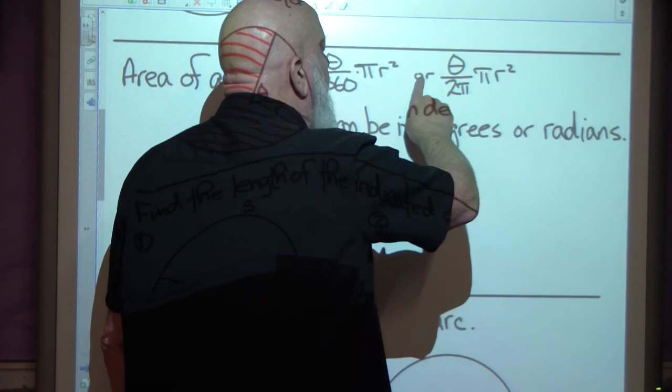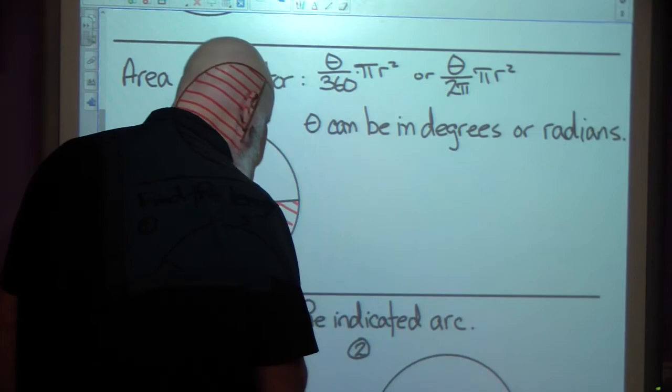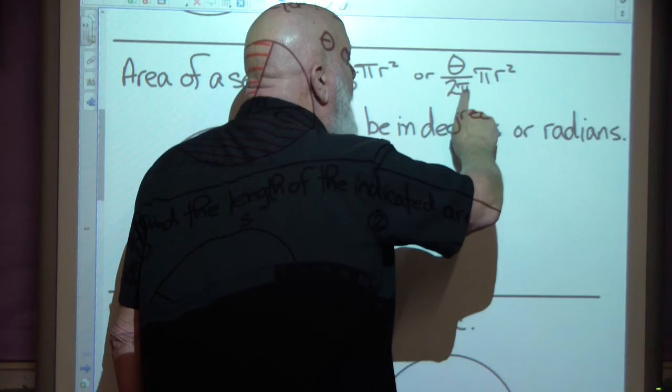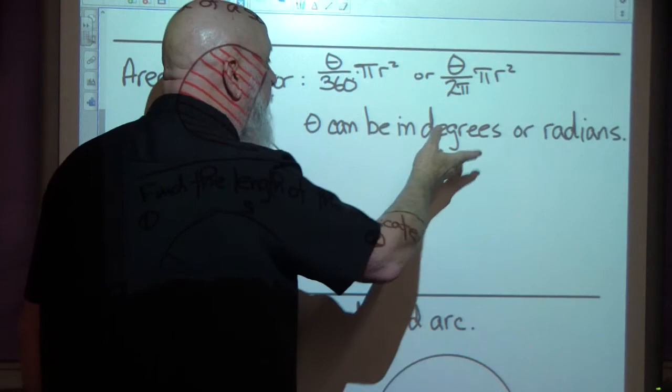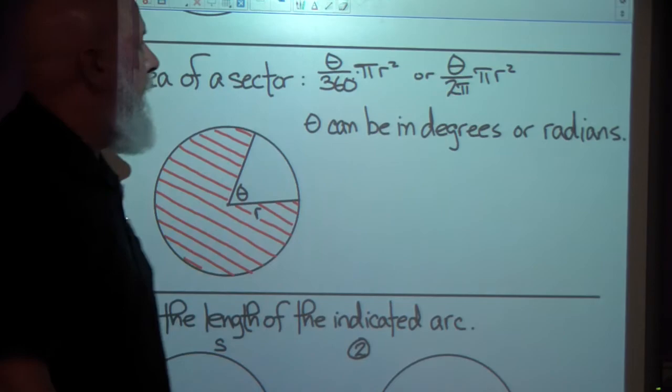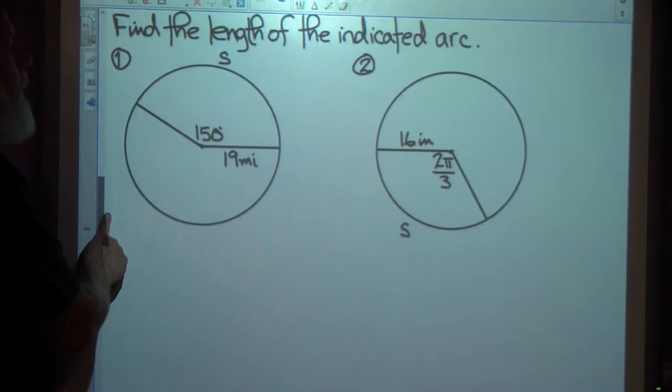Or if it's in radians, it's theta over 2 pi, which 2 pi is 360 degrees. So it'll be a fraction of the rotation, if this is in radians, theta over 2 pi times the full area of the circle, pi R squared. Theta can be degrees or radians, it doesn't matter. If it's in degrees, we use this. If it's in radians, we use that. So here we go.